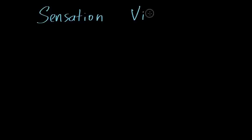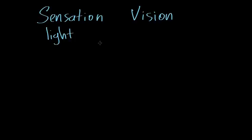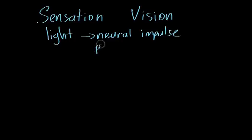Today's topic is sensation, and specifically we're going to look at our sense of sight — vision. We know we have five senses, and each one requires two things: first, some sort of physical stimulus — in the case of vision, that's light — and second, some sort of receptor, a specialized cell that can take that physical stimulus and convert it into a neural impulse. In the case of vision, that receptor is called a photoreceptor.